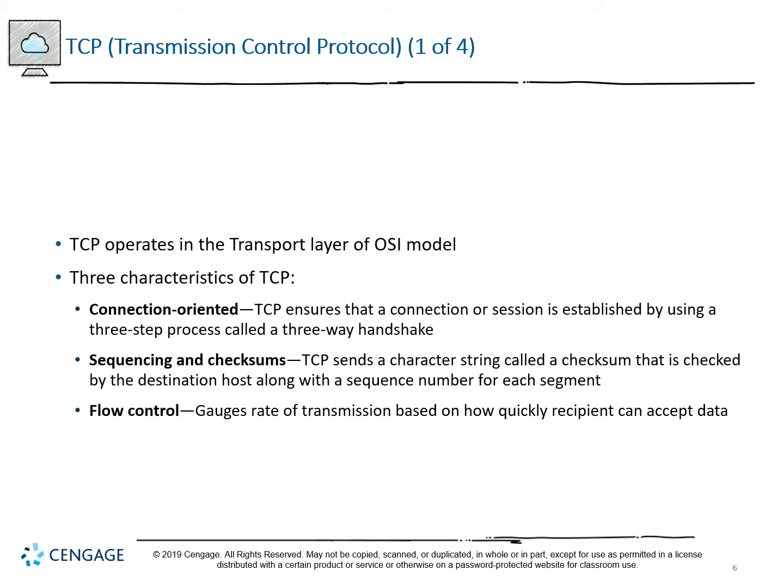TCP has three characteristics that make it suitable for a wide number of applications. First, it's connection-oriented — TCP ensures a connection or session is established using a three-step process called a three-way handshake before generating the data necessary to carry out the transaction. It also involves sequencing and checksums: a generated character string is checked by the destination, along with a sequence number for each segment, to ensure data arrives in the correct order and original condition.